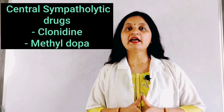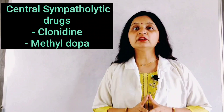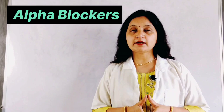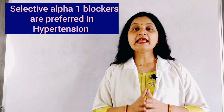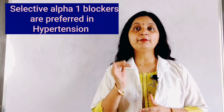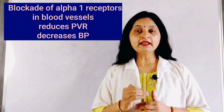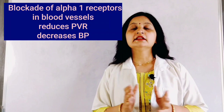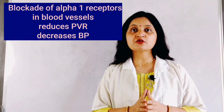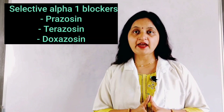The next class is alpha blockers. Alpha receptors have two subtypes: alpha-1 and alpha-2. The drugs preferred for the treatment of hypertension are selective alpha-1 blockers. Alpha-1 receptors are predominantly present in the smooth muscles of blood vessels and are responsible for vasoconstriction and increased peripheral vascular resistance. By blocking alpha-1 receptors, the peripheral vascular resistance is reduced and blood pressure is decreased. Selective alpha-1 blockers such as prazosin, terazosin, and doxazosin are preferred drugs for hypertension.